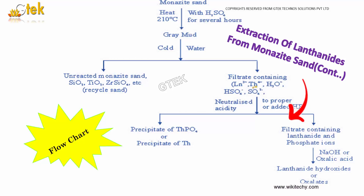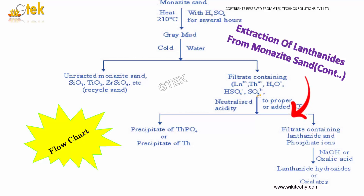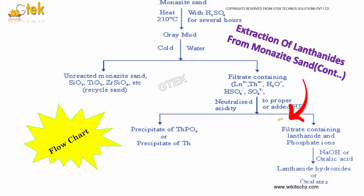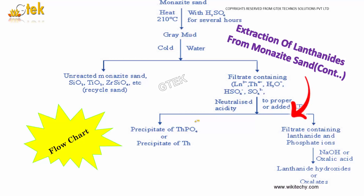You then obtain a filtrate containing lanthanum, thorium, water, monohydrosulphate, and sulphate ions. On neutralizing with acid to the proper pH, by adding HF, you get the precipitate of ThPO₄ — that is, the precipitate of thorium is separated out.